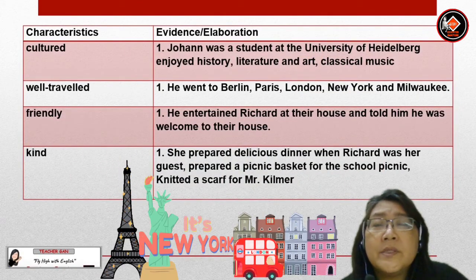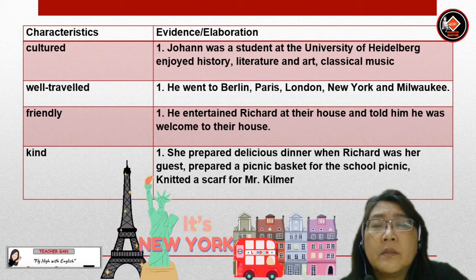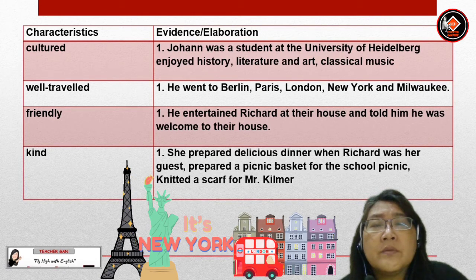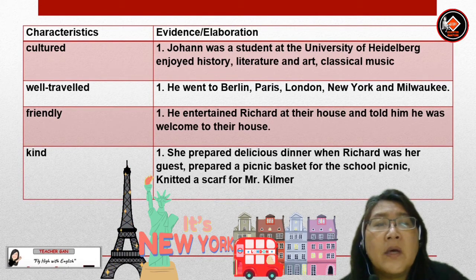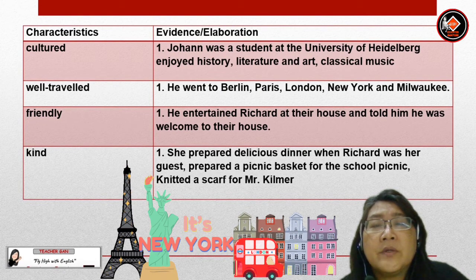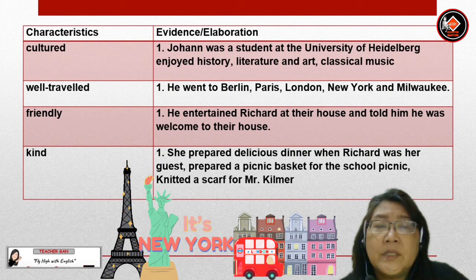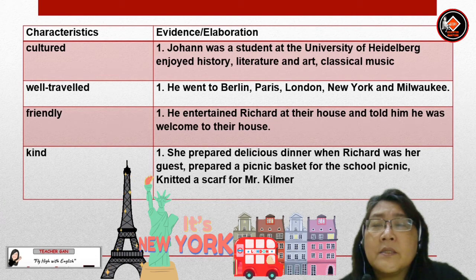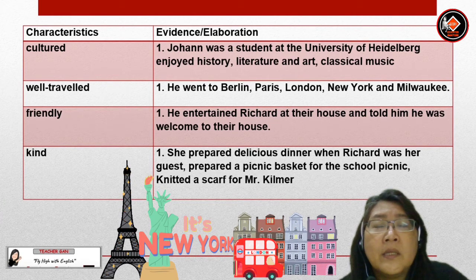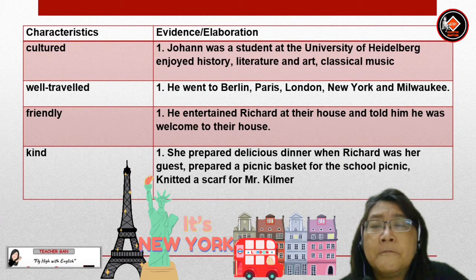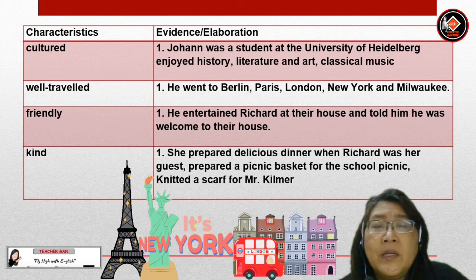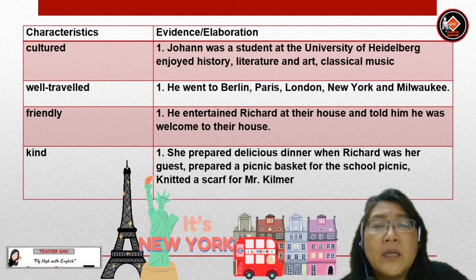Let's look at their characteristics. They are cultured. Evidence: Johan was a student at the University of Heidelberg. He enjoyed history, literature, art, and classical music. He is also well-travelled — he went to Berlin, Paris, London, New York, and Milwaukee. He is also friendly — he entertained Richard at their house and told him he was welcome any time.